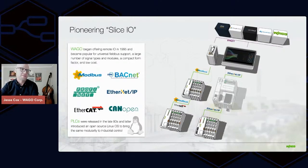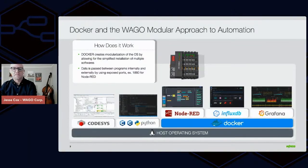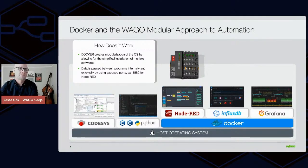Later on we released one of the first industry-available Ethernet-based PLCs, which had a web server — fairly revolutionary at the time. In the early 2010s we released the first Linux-based PLC to the market, which brought quite a bit of networking capability and the ability to do things modularly from a software standpoint. Several years ago we started to officially support the Docker engine on our platform, bringing the ability to containerize and modularize software.